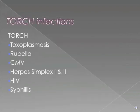Periventricular and basal ganglia calcifications are characteristic of TORCH infections. TORCH infections are congenital infections and include toxoplasmosis, rubella, CMV, and herpes simplex 1 and 2. HIV and syphilis should be considered as well.